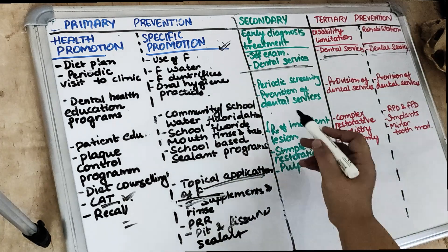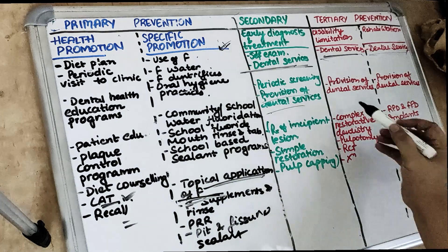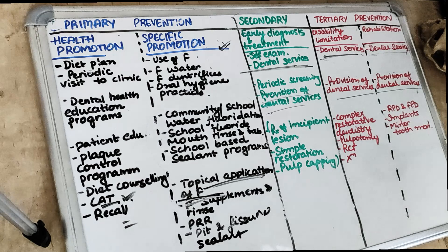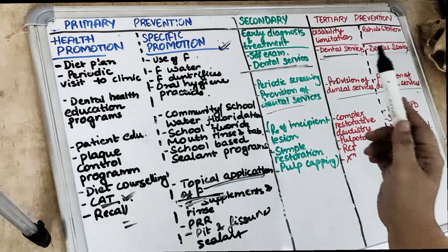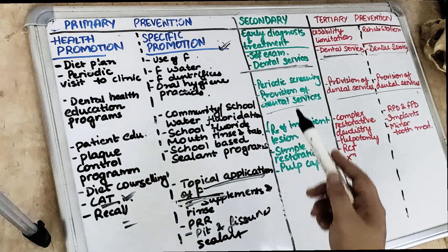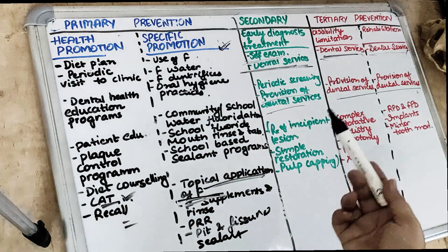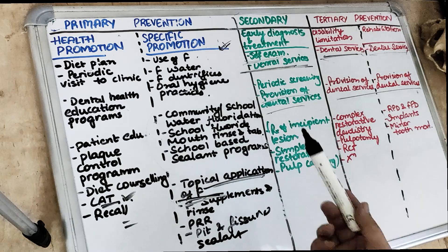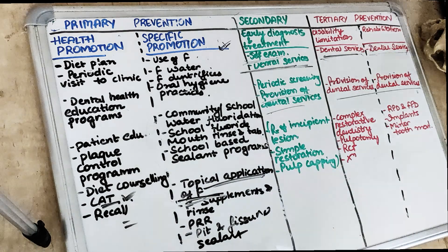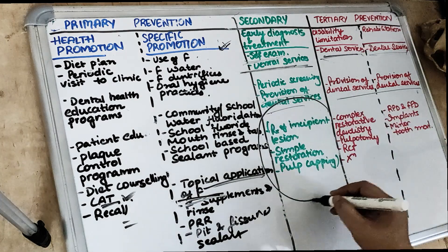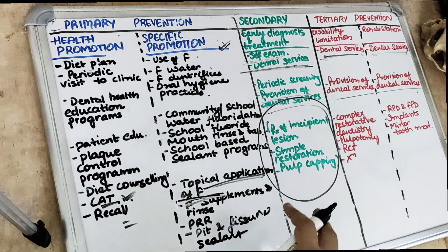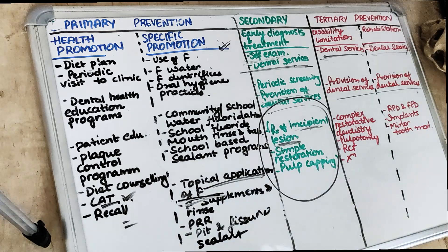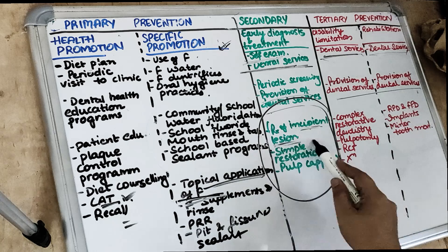At the community level, the provision of dental services again — for tertiary as well as secondary level. For the secondary level, services by the individual include self-examination and referral, then use of dental services. Services by the community include provision of dental services, periodic screening and referral. Services by a dentist include simple restorations, pulp cappings, preventive resin, and complete examination and treatment of incipient caries. Because this is early diagnosis, we treat the incipient lesion.